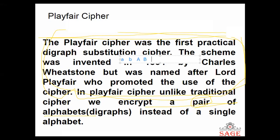But if something happens like a and b are combined together — that is, a followed by b — then we can say that a is a single letter and b is also a single letter, but a-b together is called a pair. This is called the pair: a-b. Whether it is a small letter a-b pair or a capital letter a-b pair.